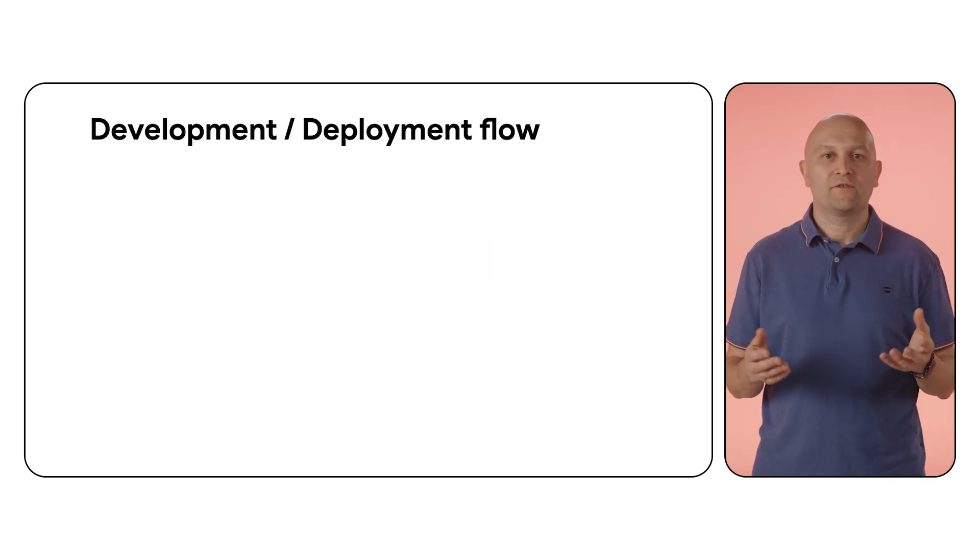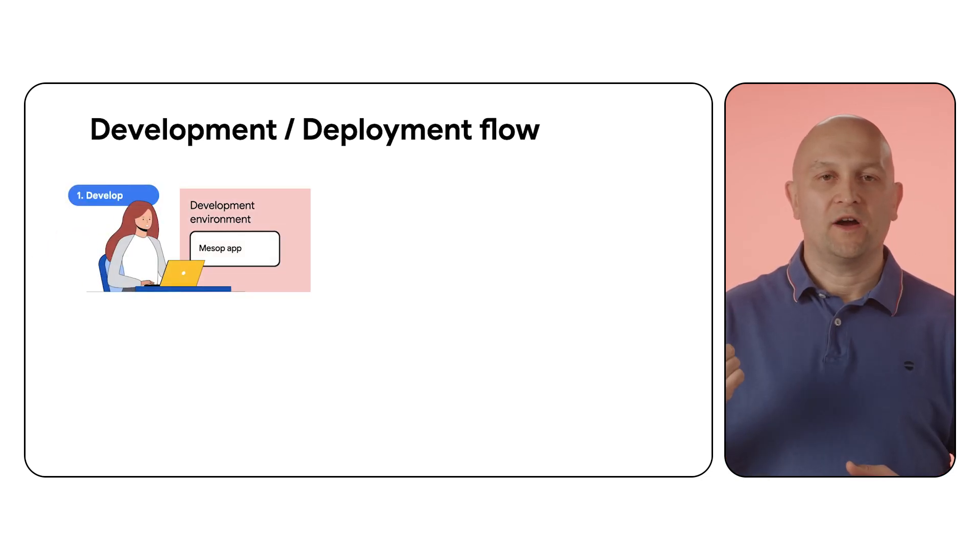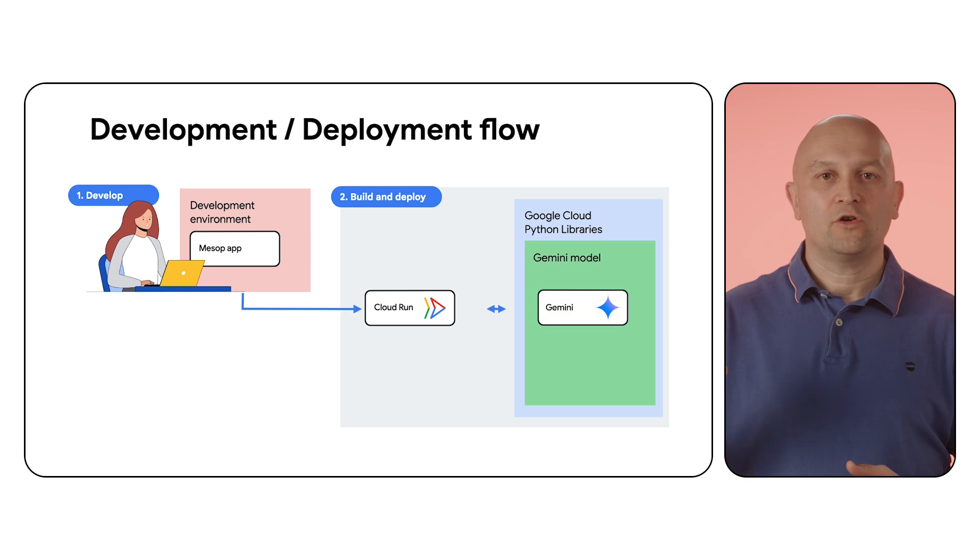I am going to walk you through the following steps of the deployment process: setting up your local development environment, and building and deploying the Docker image to Cloud Run. Important note: this part assumes you have an existing Google Cloud project with Vertex AI, Cloud Run, and Artifact Registry APIs enabled. Moreover, you should install and initialize gcloud locally to leverage application default credentials. You can find the links to details on these steps in the description below.